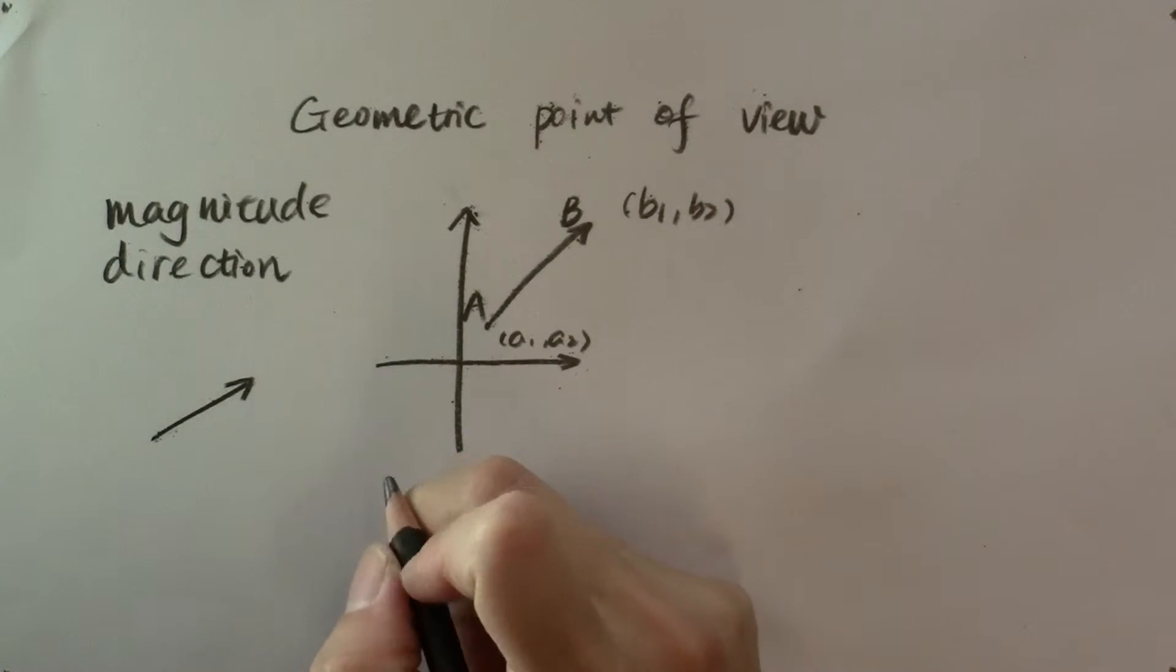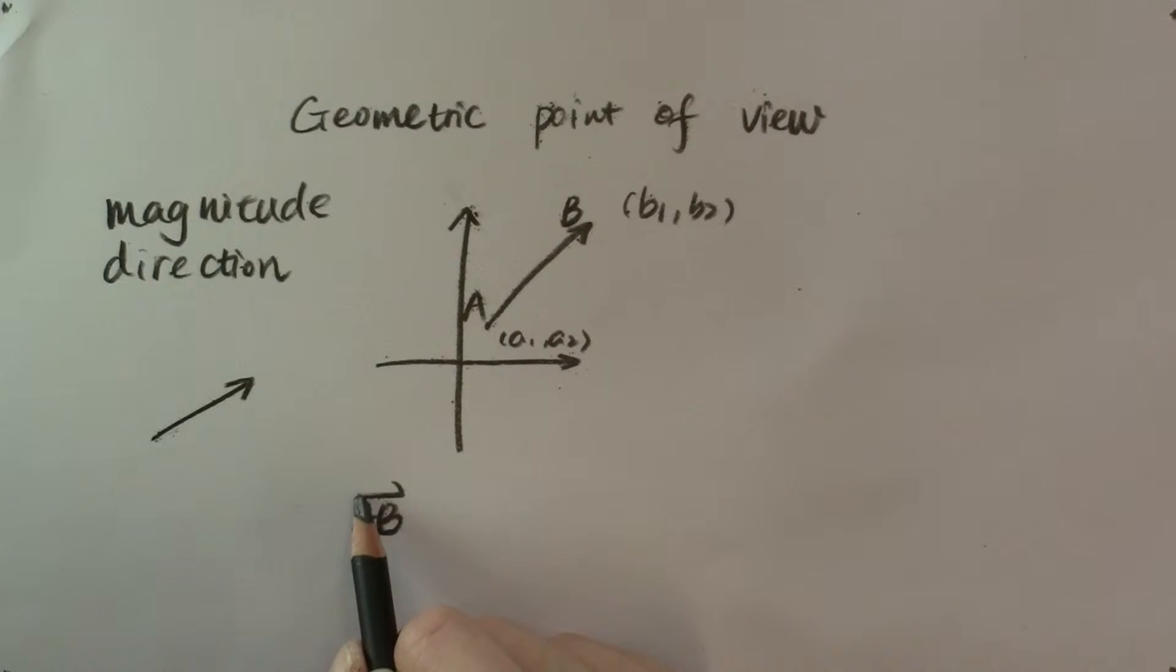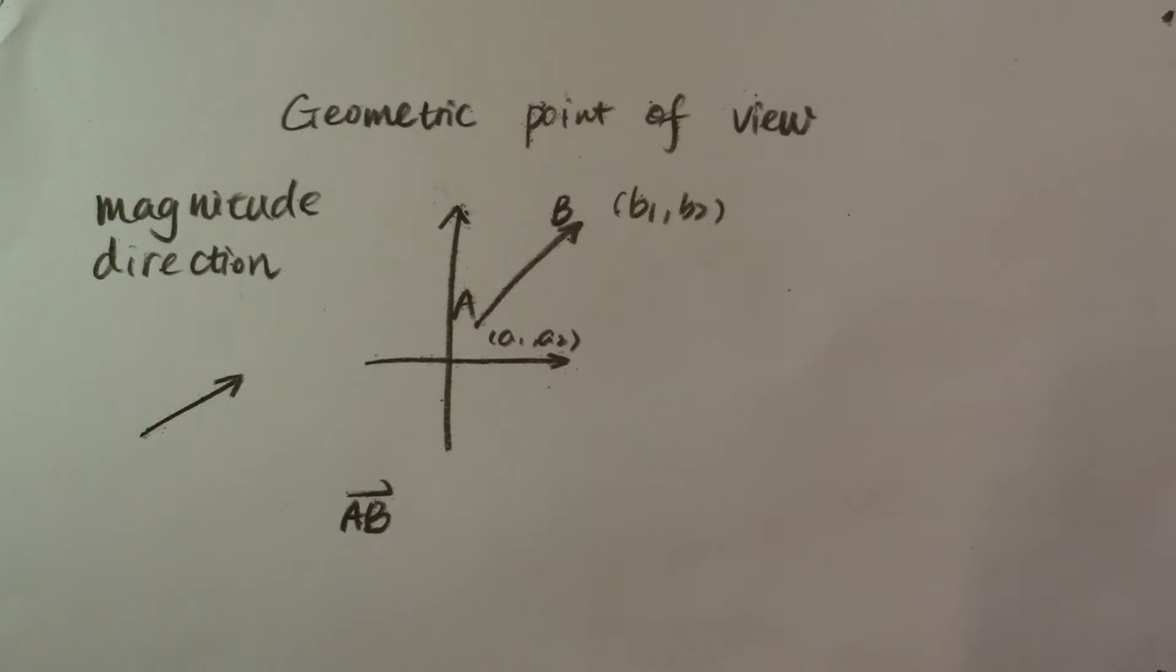We can give it an intuitive notation, vector ab with an arrow pointing from letter a to letter b. And here's where it connects back to the algebraic representation of a vector.